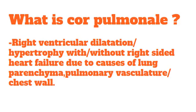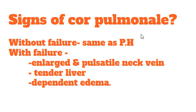Now the most important question: what is cor pulmonale? The definition of cor pulmonale is right ventricular dilatation or hypertrophy, with or without right-sided heart failure, due to causes of the lung parenchyma, pulmonary vasculature, or chest wall. In short, any sort of right ventricular dilatation or hypertrophy — there may be failure or may be without failure — due to any lung cause, chest wall cause, or pulmonary vasculature cause. What are the signs of cor pulmonale? If there is no heart failure, the signs will be similar to pulmonary hypertension. But if there is failure, the patient will have enlarged and pulsatile neck vein, tender hepatomegaly, and dependent edema — the features of right heart failure.